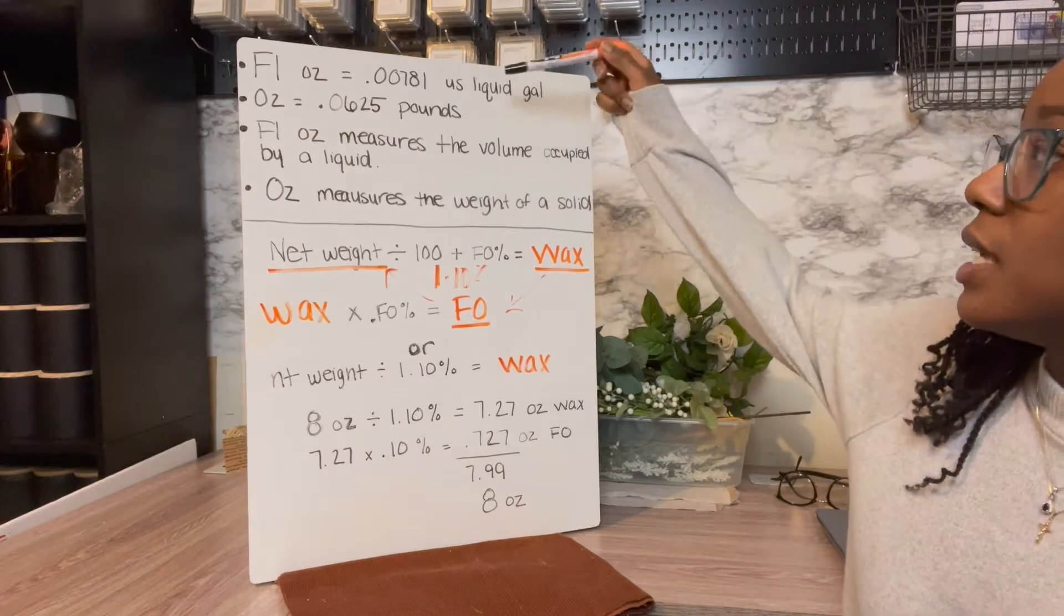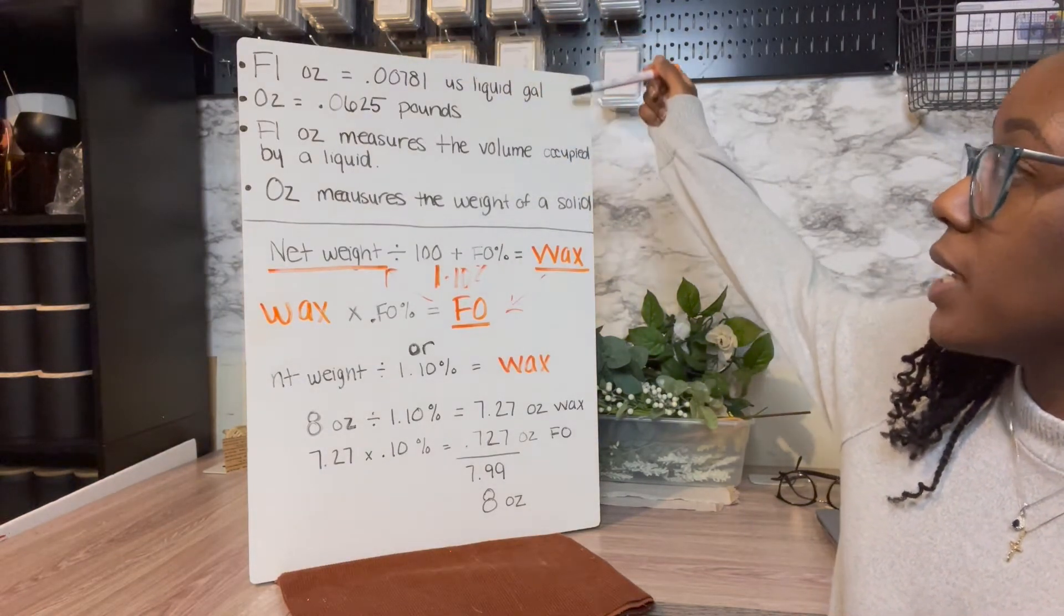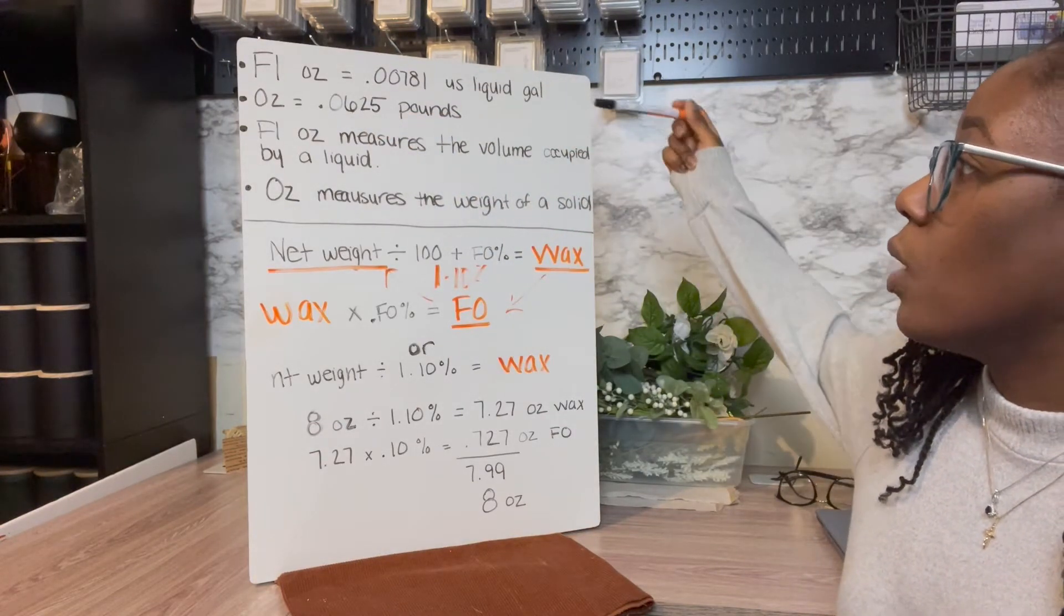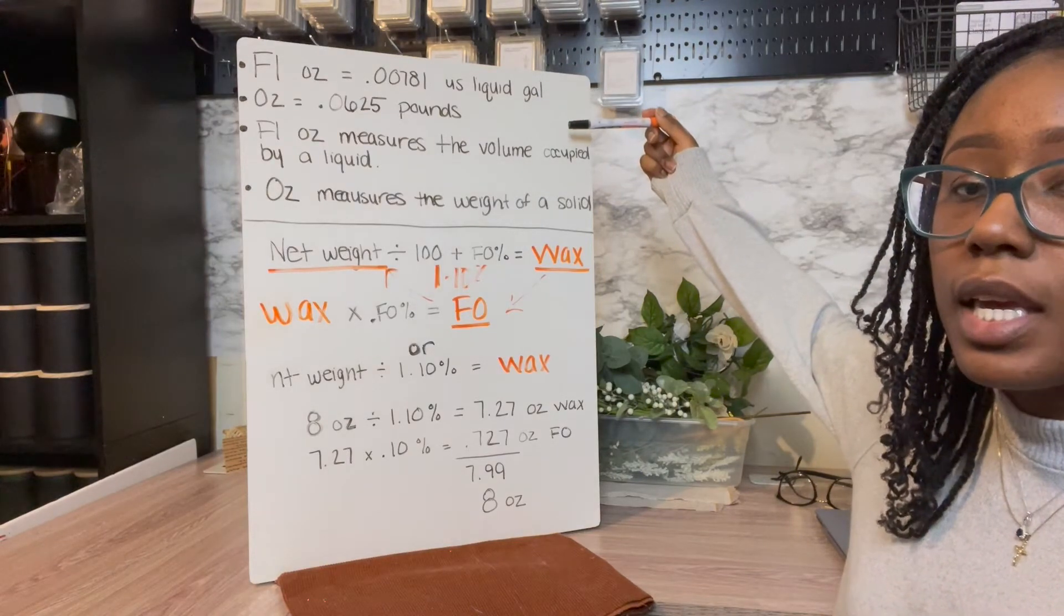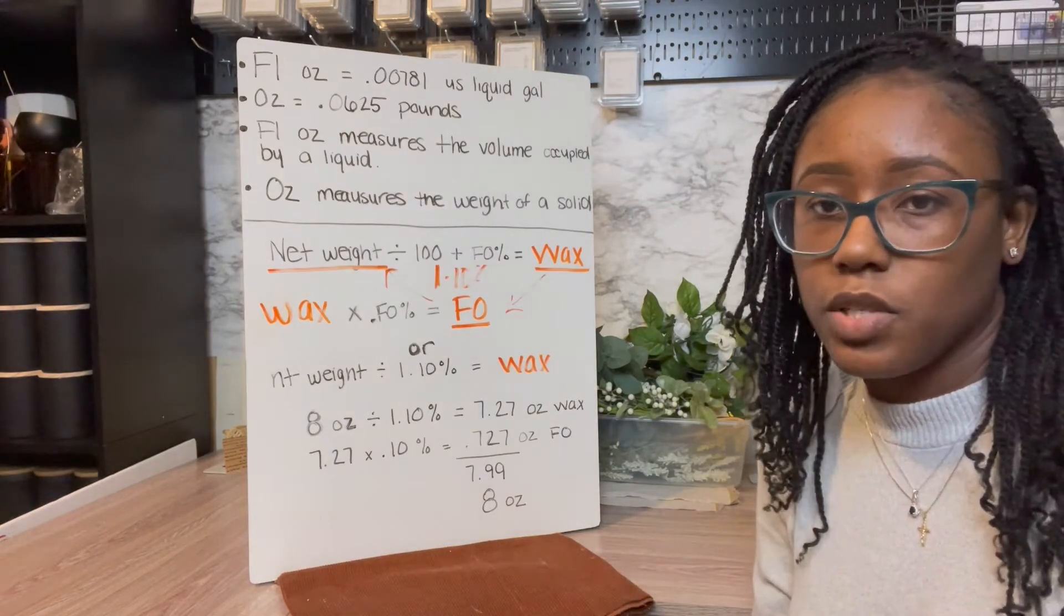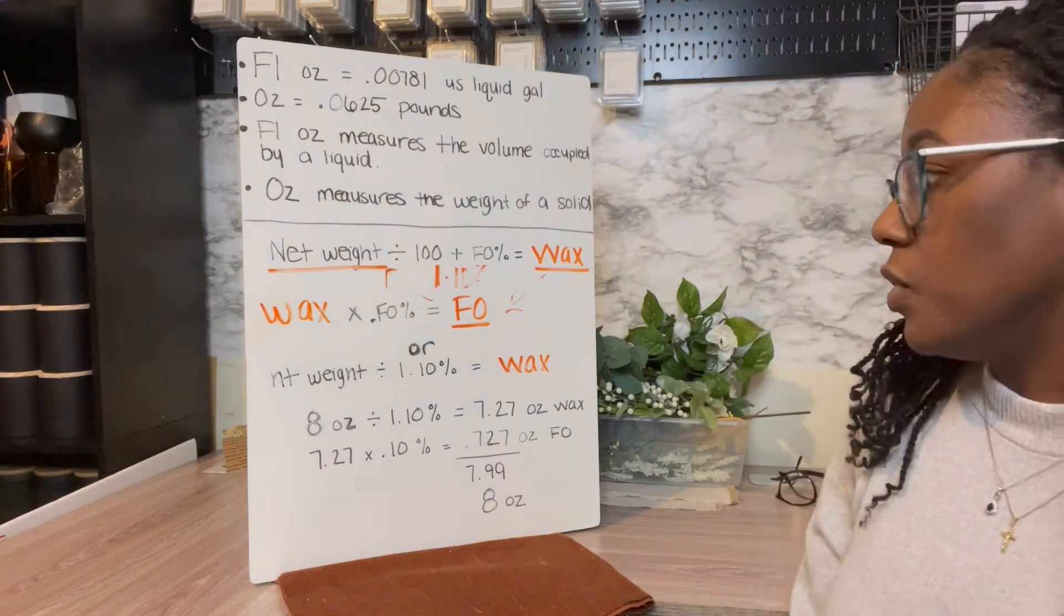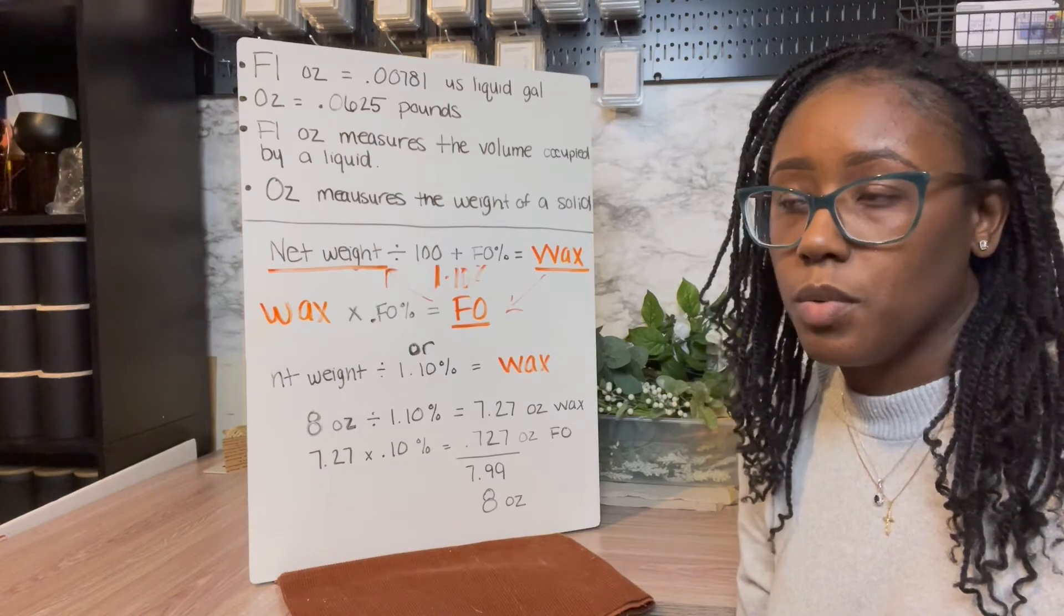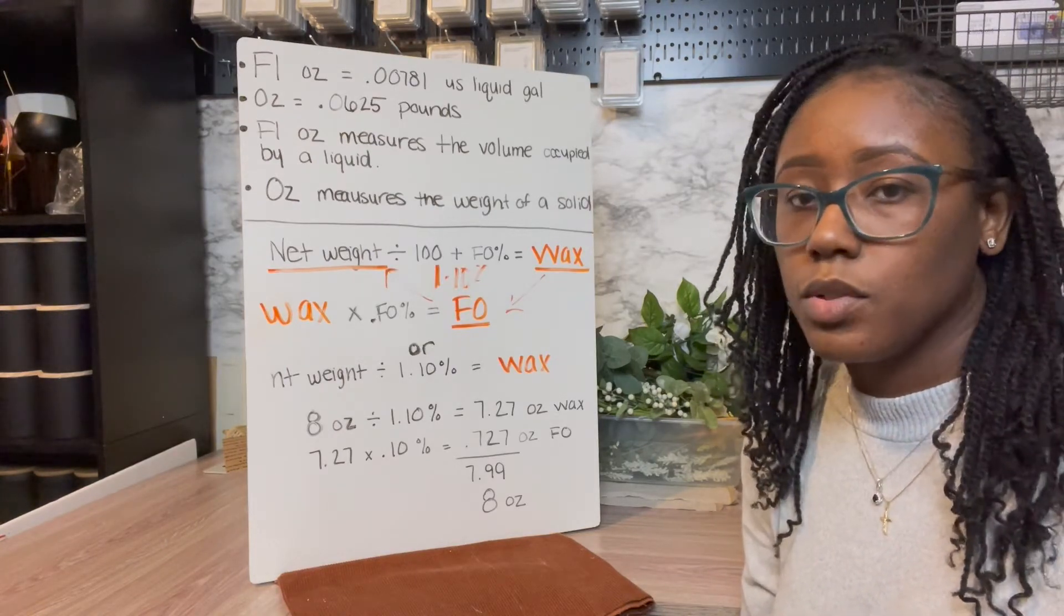Fluid ounces is 0.00781 U.S. liquid gallons. Ounces is 0.0625 pounds. So one of them measures liquid volume and one measures weight. You're going to be measuring your net weight because we're measuring a solid. We're weighing a solid. If you were doing room sprays or reed diffusers then you would measure in fluid ounces but since we're doing candles we're going to use ounces.